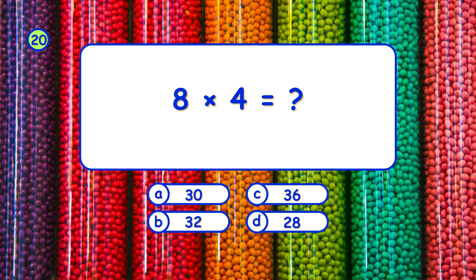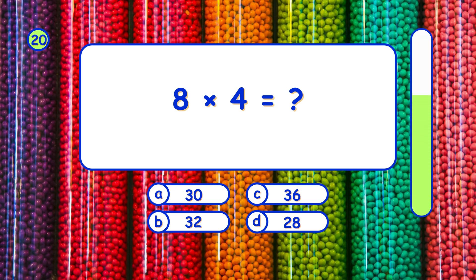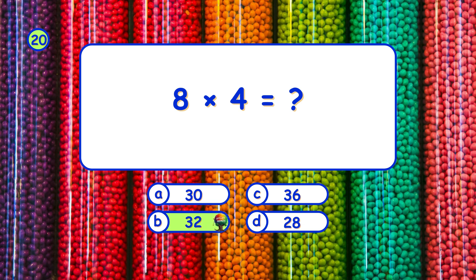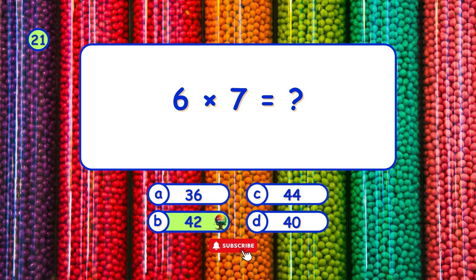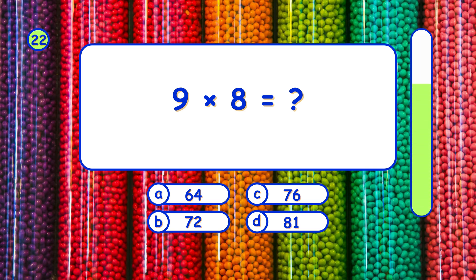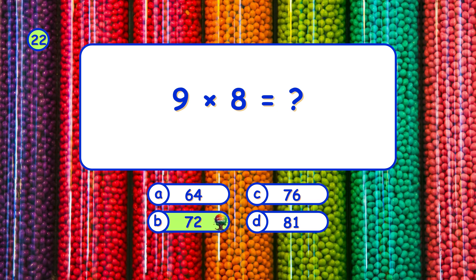What is 8 times 4? It's B, 32. What is 6 times 7? It's B, 42. What is 9 times 8? It's B, 72.